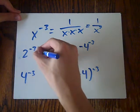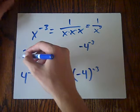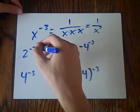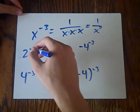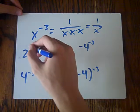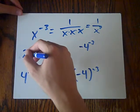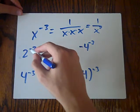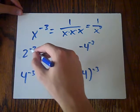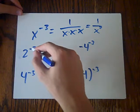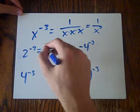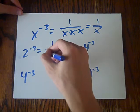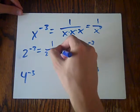So first off, 2 to the power of negative 3 — actually no, it's not negative 3 times, it's 2 times 2 times 2 under 1. So 2 times 2 times 2 under 1.